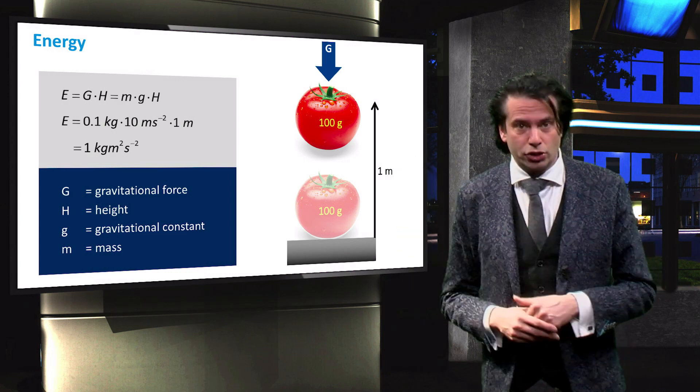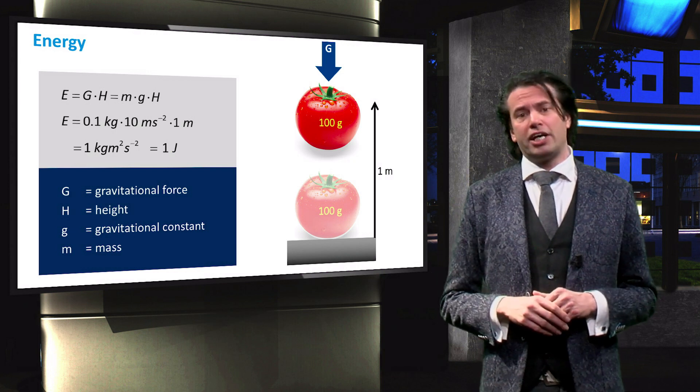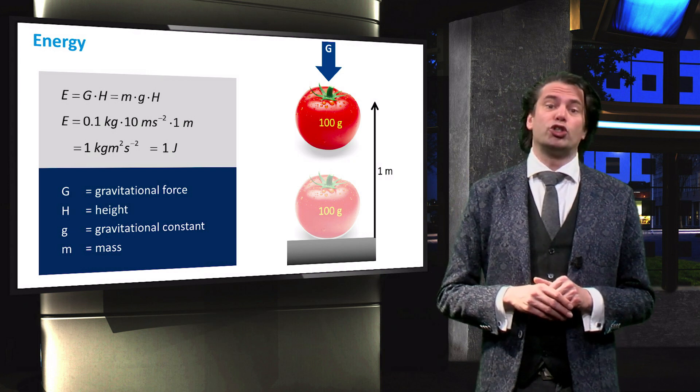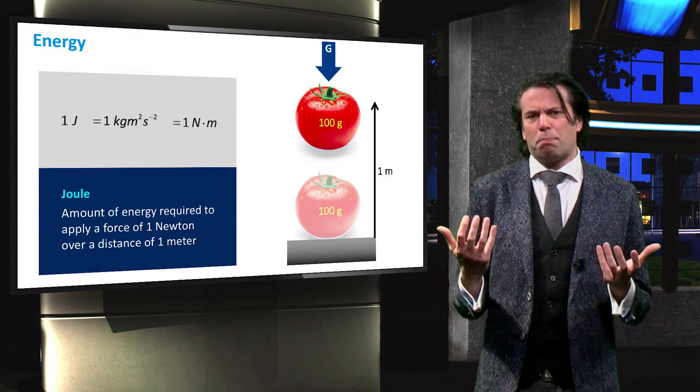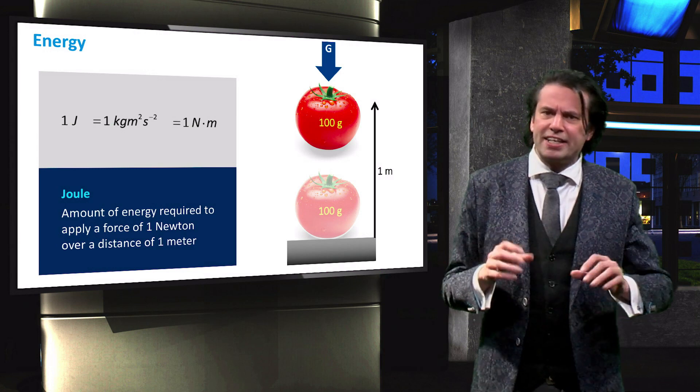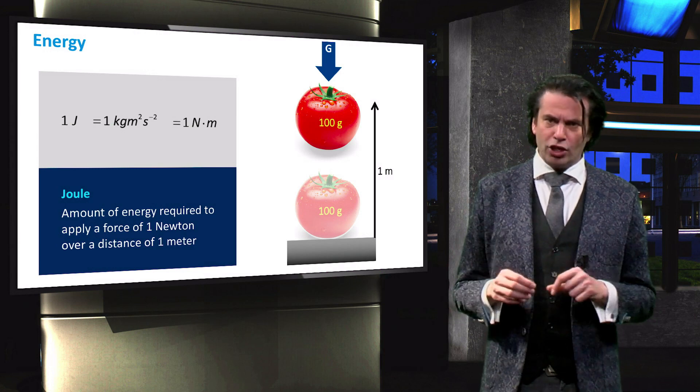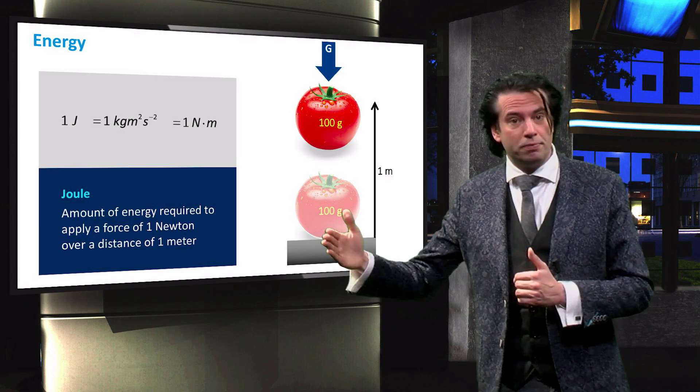This is known as a joule, after the English physicist James Prescott Joule. Since energy is equal to a force applied over a certain distance, one joule can also be defined as the amount of energy required to apply a force of 1 newton over a distance of 1 meter.